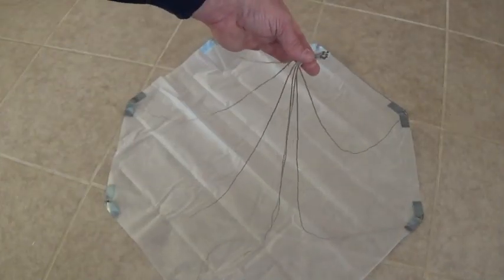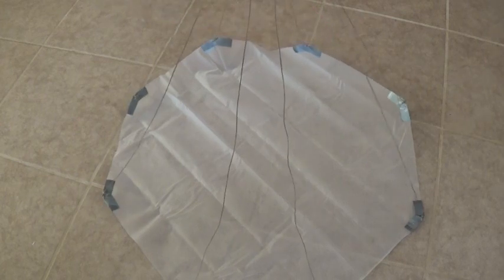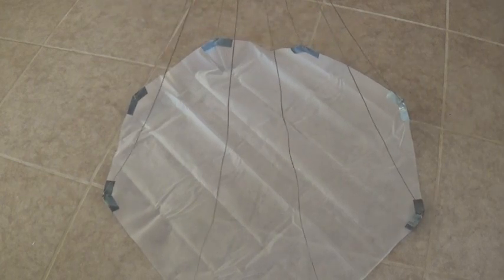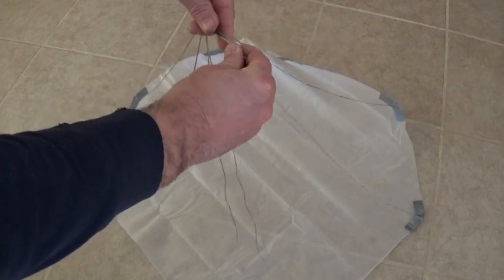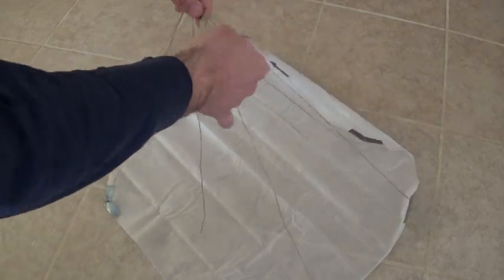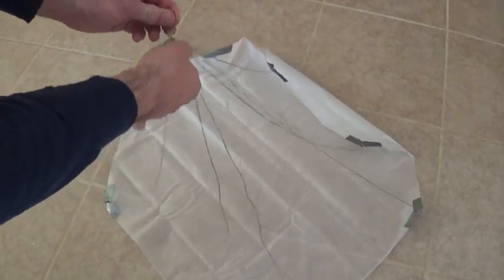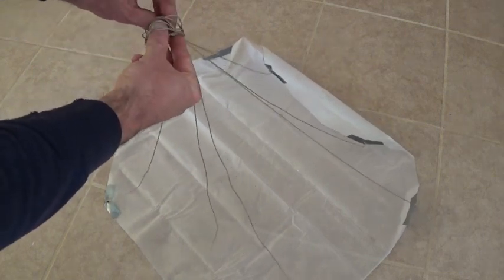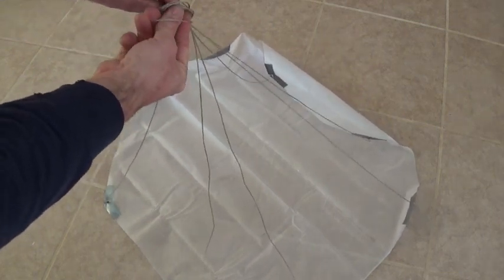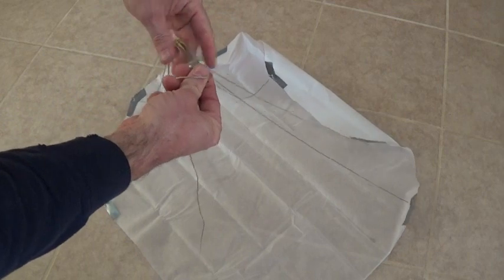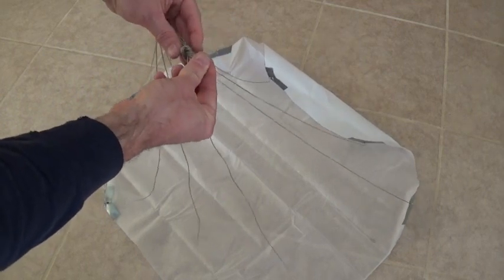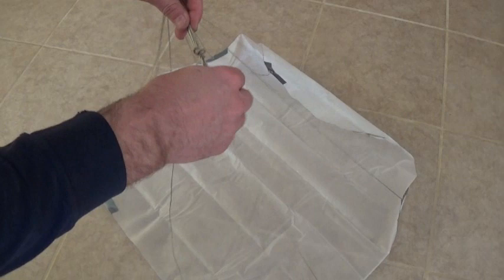Now bring your strings all up to one central location, making sure that they're not twisted together. Now you can either tie a knot right here, which is what I'm going to do, or if you're ready, you could tie this directly to either your shock cord or to your nose cone, depending on which technique you're using. But for right now, I'm just going to tie these all together so that I can go test this out in the wind.